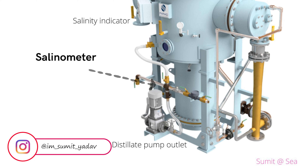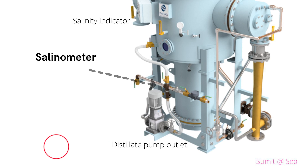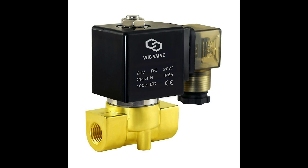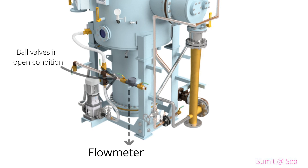Number six is the salinometer — a device installed on the fresh water generator capable of detecting even the slightest salt content in the sampling water. It is connected to the distillate output just before the solenoid-operated three-way valve. The salinometer output feeds to the control panel, which, based on the required salt limit, will send fresh water for storage or back to the fresh water generator. Number seven is the solenoid valve, which opens to return high-salinity distillate back to the evaporator. Number eight is the flow meter, which tells us the actual fresh water production per day or per hour.